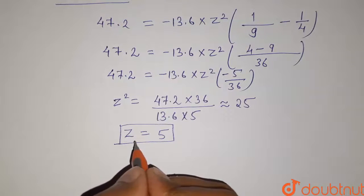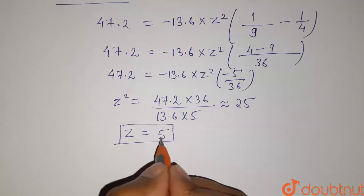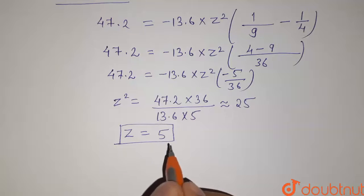So this is the answer for our question, that is the atomic number of atom is equals to 5. Thank you.